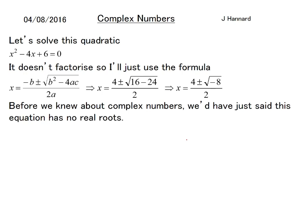We get (4 ± 2√2i) / 2, therefore x = 2 ± √2i. So these roots are the conjugates of each other because one is the sign change of another.